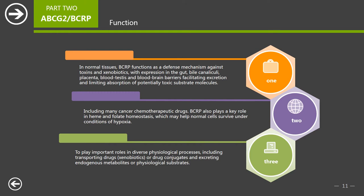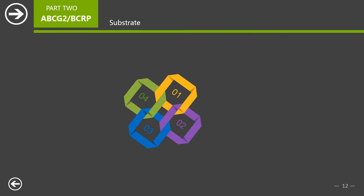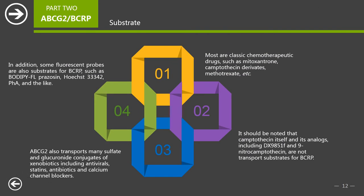ABCG2 plays important roles in diverse physiological processes, including transporting drugs, xenobiotics, or drug conjugates, and excreting endogenous metabolites or physiological substrates. The substrates of ABCG2, identified directly by cellular or vesicular transport assays, or indirectly by substrate-stimulated ATPase activity or cytotoxicity assays, comprise a broad spectrum of anti-cancer drugs, sulfate and glucuronide conjugates of sterols and xenobiotics, natural compounds and toxins, fluorescent dyes, photosensitizers, and antibiotics.